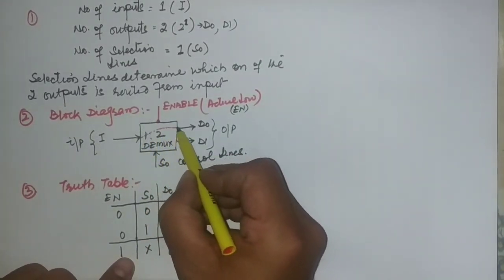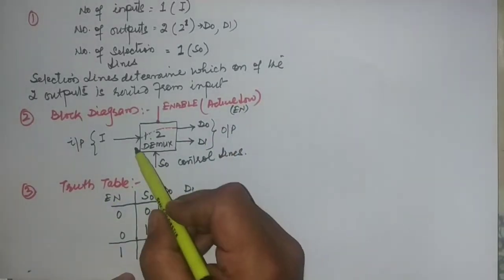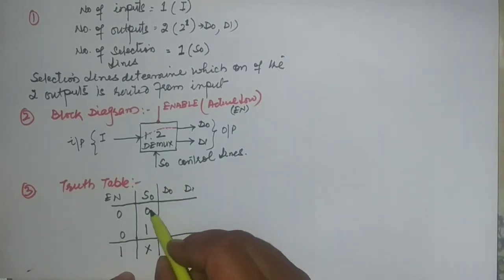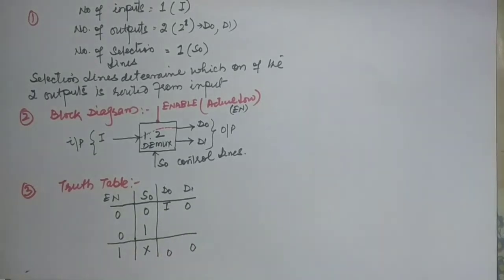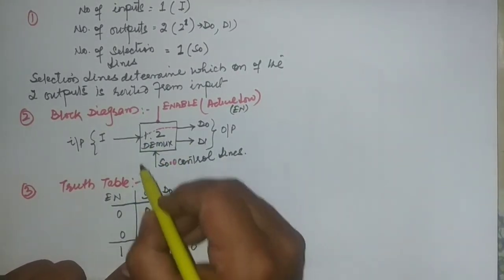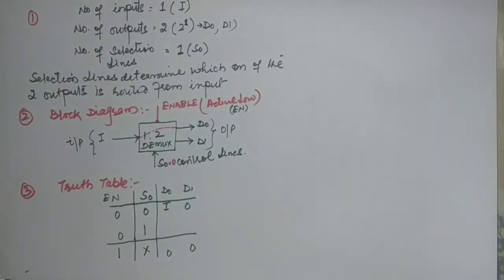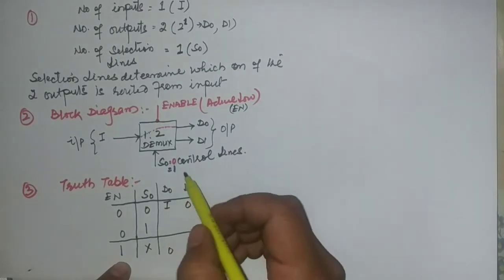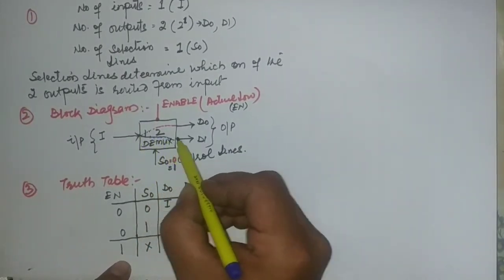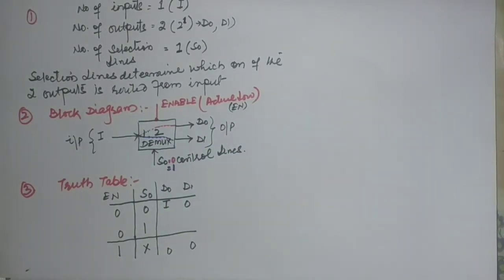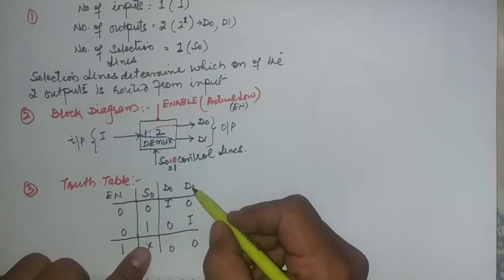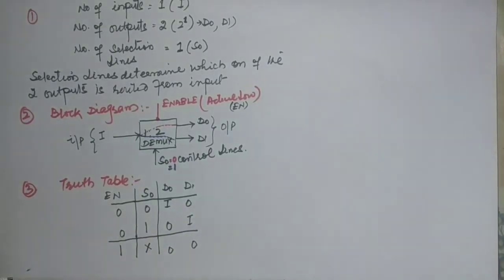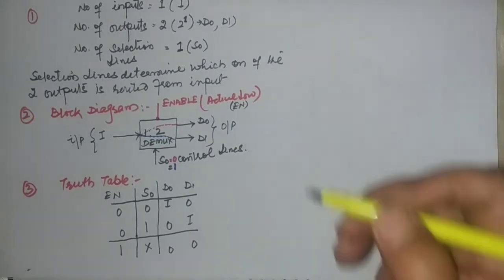When the selection line S0 is equal to 0, the input will be directed through D0. When S0 is equal to 1, the input will be directed through D1, and nothing comes from D0. This completes the third point on the truth table.